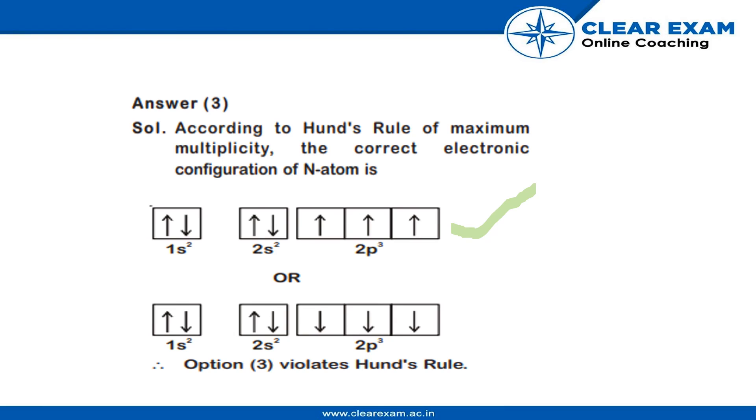They have to be either in the same direction, all the three electrons in the p-shell. The option third which is mentioned on the last slide violates Hund's rule. Therefore, our answer is option 3.